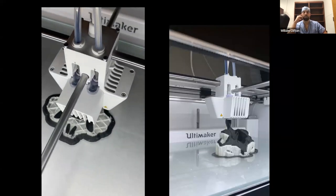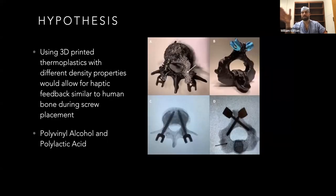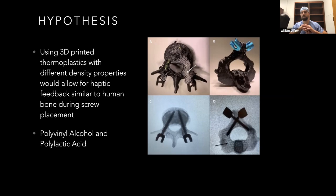My first experiment was how to replicate the cortical cancellous interface and the ventral lamina concept so I could learn how to put in screws. I went ahead and bought my own 3D printer and set it up in my bedroom — my wife was seven months pregnant at the time and she thought I was absolutely out of my mind. I started printing out all these different vertebral models trying to figure out how I could mimic the difference in density between the cortical and cancellous surface. My hypothesis was that if I used different polymers with different density differences, I could get similar haptic feedback, so I went with polyvinyl alcohol and polylactic acid.